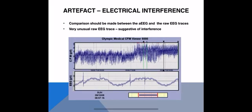Here we can see electrical interference on the CFM trace: the baseline rises up and when we compare this to the raw EEG it looks really unusual, which is suggestive of interference from equipment. You might see this sort of picture if a baby is on high-frequency ventilation.